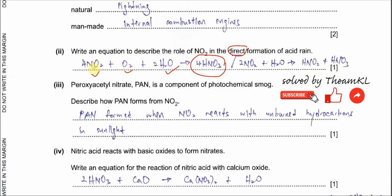Nitrogen dioxide with oxygen and water will produce nitric acid. You just balance the equation accordingly.